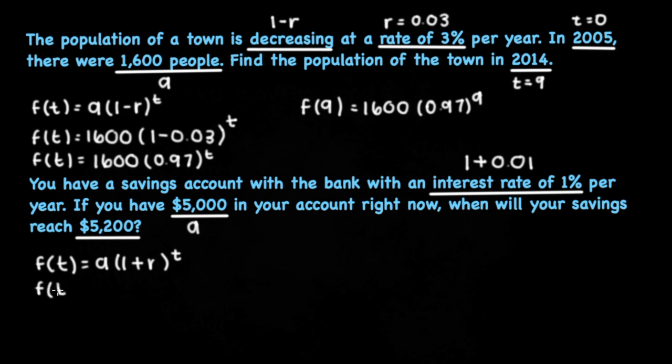Now we can plug in what we know given the information. So that's 5,000 times 1 plus 0.01, which is 1.01 to the t power.